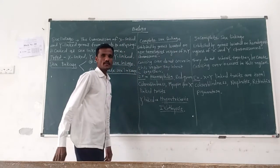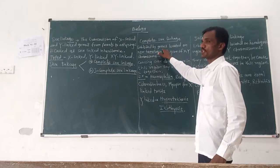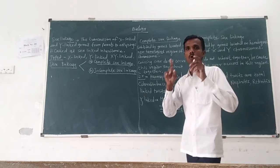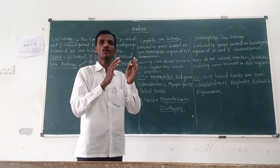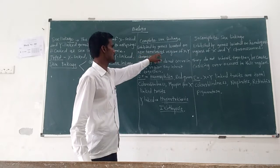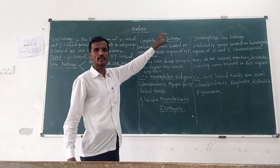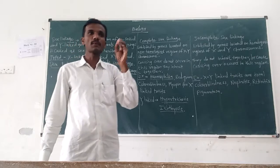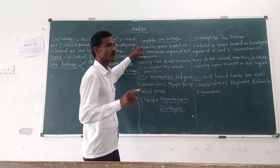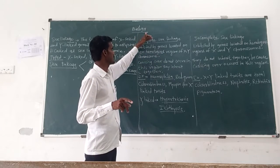The first type is complete sex linkage. It involves X-linked genes — those genes located on the non-homologous region of the X and Y chromosomes. This is called complete sex linkage.